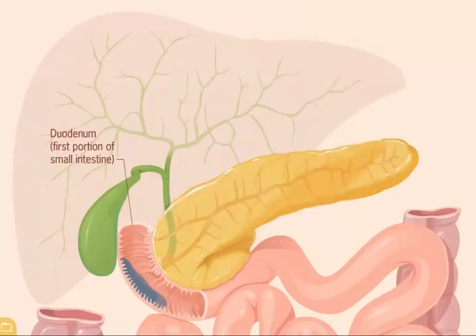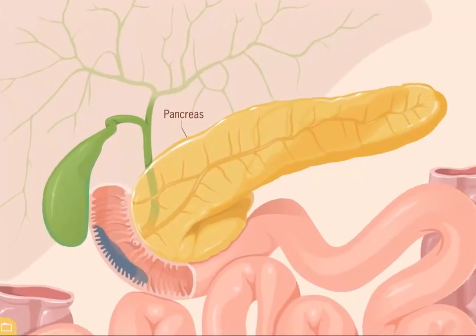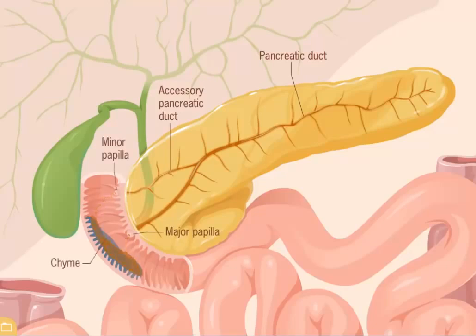The process of digestion causes neural and hormonal stimulation of the pancreas to release pancreatic juice. Specialized pancreatic cells produce the juice, which contains digestive enzymes and bicarbonate. The major digestive enzymes are amylase, which digests carbohydrates; lipase, which digests fats; and protease, which digests proteins. When pancreatic cells release the juice, it flows through tiny pancreatic ducts, which lead to the main pancreatic and accessory pancreatic ducts. The juice is then released into the duodenum through the major and minor papillae, where it mixes with the chyme. To protect the pancreas, protease is released in an inactive form and is activated once it reaches the duodenum. Bicarbonate within the juice acts to neutralize the acidic chyme, which creates a favorable environment for the digestive enzymes to function.